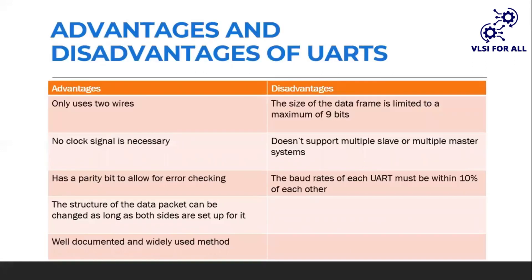Every communication protocol has its own advantages and disadvantages. The advantages of UART are that it has very simple connections requiring only two wires, it doesn't require any clock signals, it has a parity bit for error checking, and it is well documented and widely used. The disadvantages of UART are that the maximum number of bits at a time is limited to 9 bits, it doesn't support multiple devices connected at the same time, and the baud rate for every UART must be within 10% of each other — if not, errors may occur.